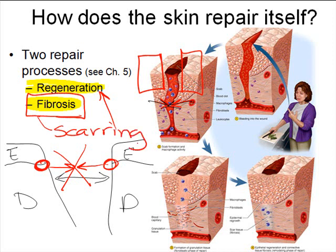The primary cells responsible for the manufacture of scar tissue should not be a surprise — it's fibroblasts. They're the main players in secreting connective tissue matrix.